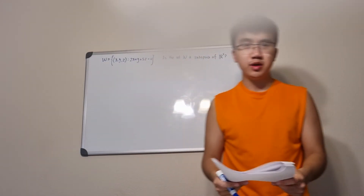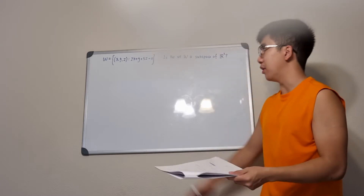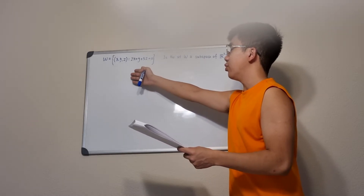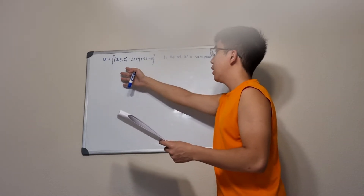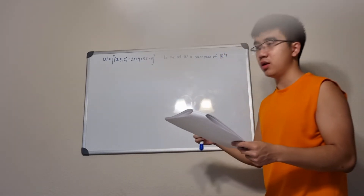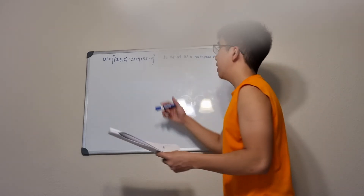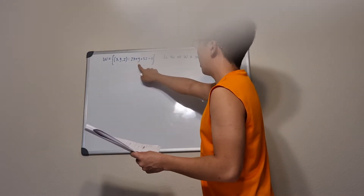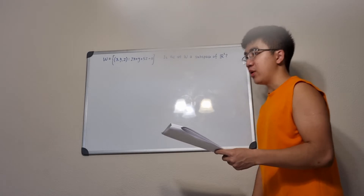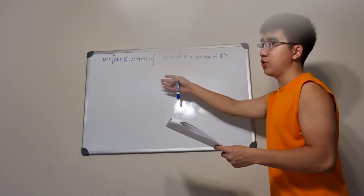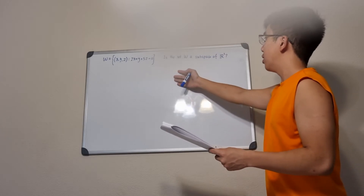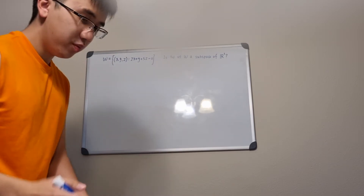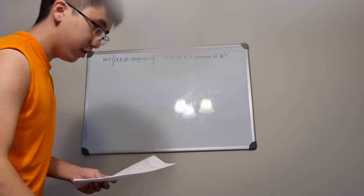Hello everyone, this is Raymond. Today we're going to be looking at another linear algebra problem. We're given a set W which contains the vector (x, y, z), a vector in R3 with three components. The entries of the vector must satisfy the equation 2x + y + 5z = 0, and we need to check whether the set W is a subspace of R3.